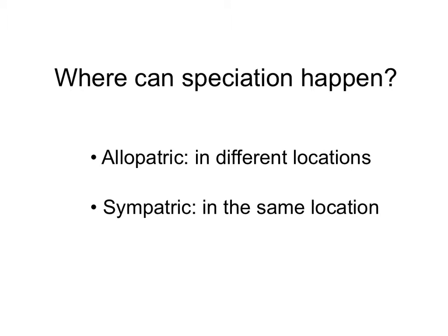Where can speciation happen? We have two options: it either happens in different geographical locations or in the same geographical location. We use the term allopatric speciation when referring to speciation in different locations — think 'allopatric' meaning apart. Sympatric speciation happens in the same location — sympatric means same location, allopatric means apart, different location.